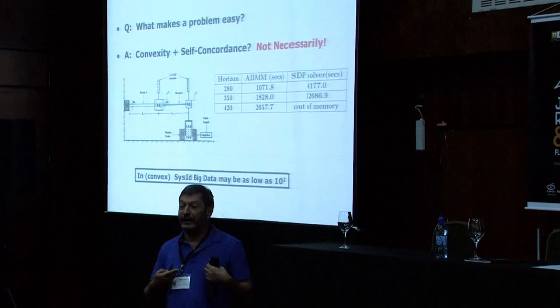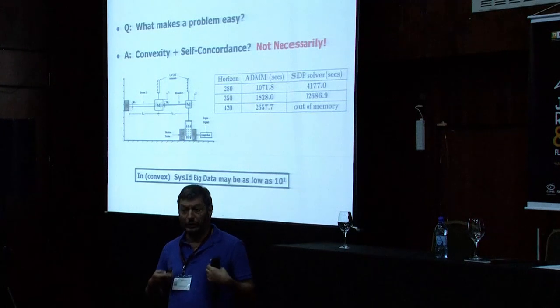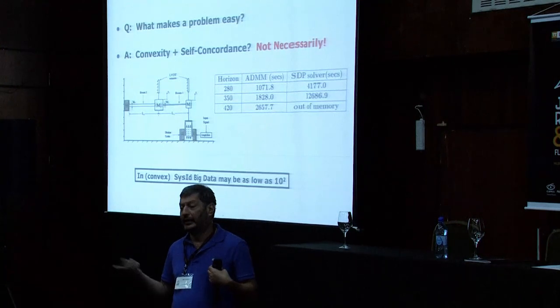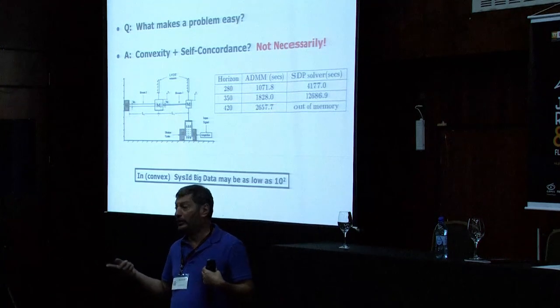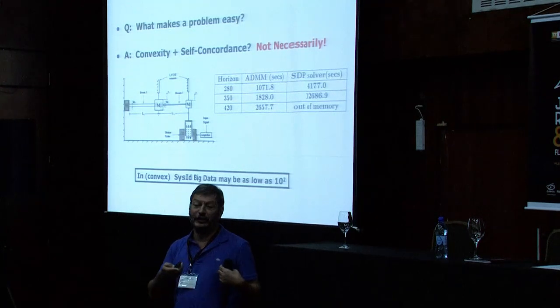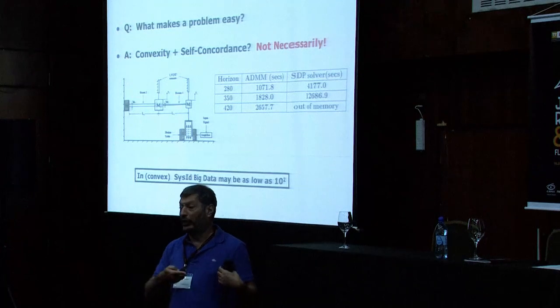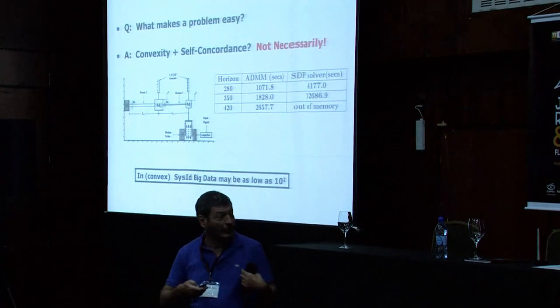This goes back to my point that in control, in convex sysID, maybe big data for us is 200 points or a few hundred points, if we use the definition that big data is whatever your algorithms cannot handle.